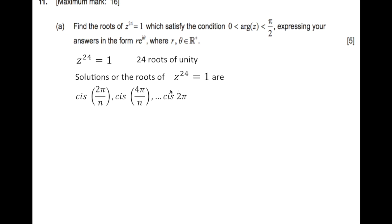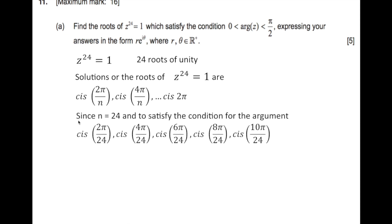cis(2π) is actually equal to 1, so 1 is always a root of unity — one of the solutions — so you stop when you reach cis(2π). In this case n is 24, so the solutions start with cis(2π/24), then adding 2π each time gives cis(4π/24), and so on.